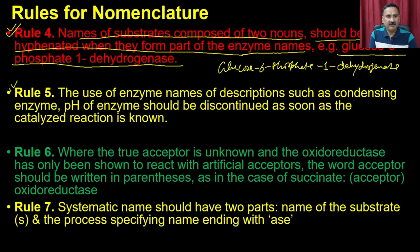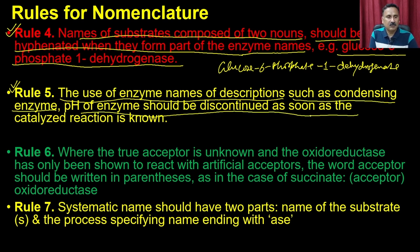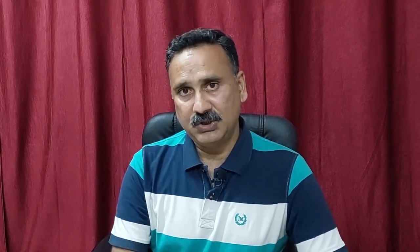Rule 5: use of enzyme name descriptions such as 'condensing enzyme' or reference to the pH of the enzyme should be discontinued as soon as the enzyme-catalyzed reaction is known. Once you have characterized the enzyme and know the mechanism of reaction and the cofactors involved, these informal descriptive terms should be discontinued.